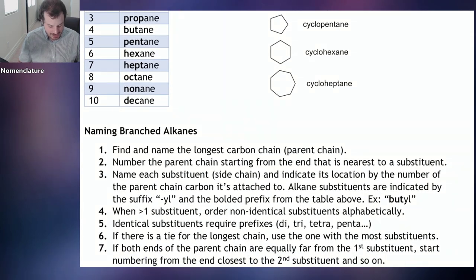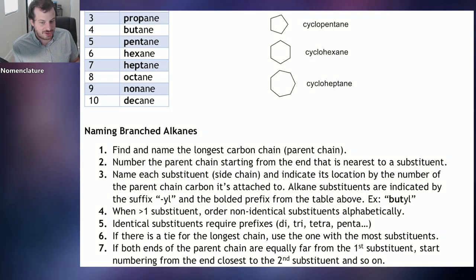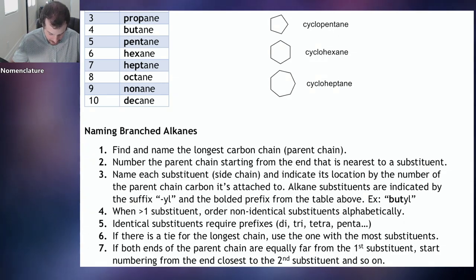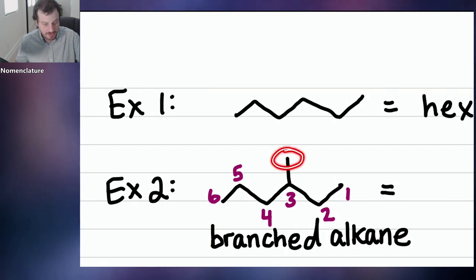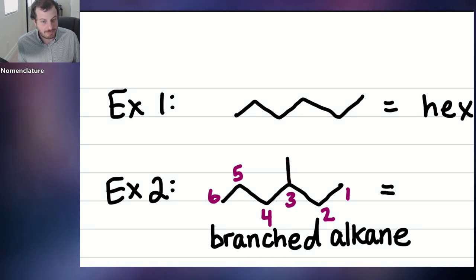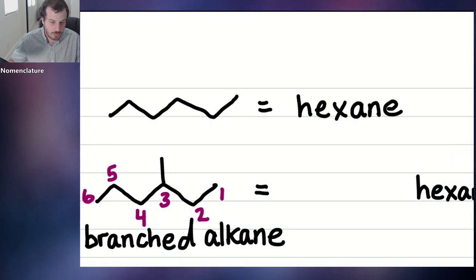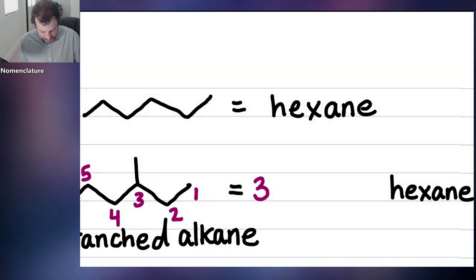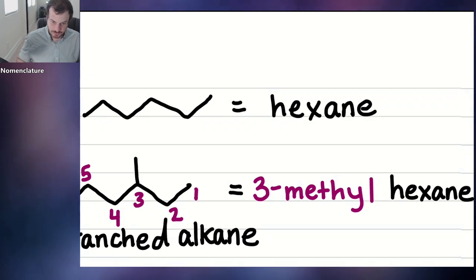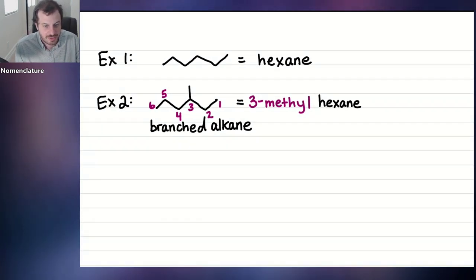Step three: name each substituent, also called a side chain, and indicate its location by the number of the parent chain carbon it's attached to. Alkane substituents use the suffix '-yl.' Our substituent is an alkane with one carbon — a methane group — but because it's a substituent, we don't call it methane. Instead, we call it methyl. So this compound is called 3-methylhexane.